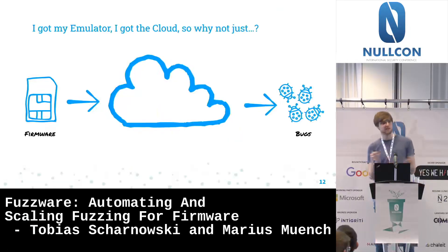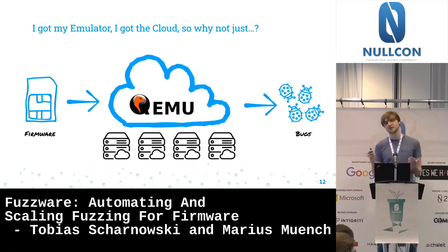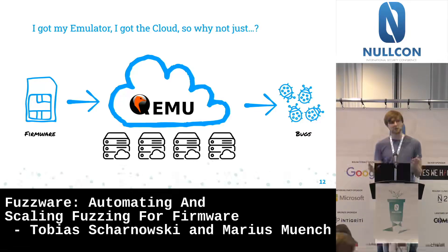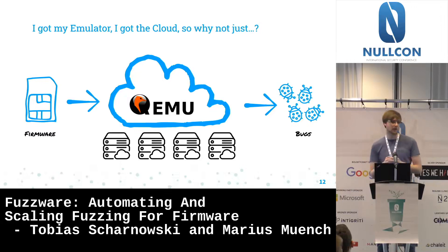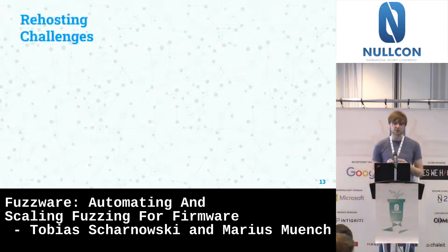You might say: we already have an emulator, we have the cloud — why not just combine them? Take QEMU, plug the firmware in, do some fuzzing, put a cloud service behind it, and the bugs will fall out. But sadly there is a challenge: the complexity of hardware devices. Every vendor offers different devices, every device has different peripherals — timers, serial interfaces, Wi-Fi — and each peripheral has different memory registers, which multiplies up enormously.